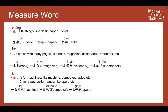Then let's see the second special measure word: 本。 本 is used for books with many pages, like books, magazines, dictionaries, notebooks, and so on. Let's see the examples. 一本书 — a book. 一本杂志 — a magazine. 一本词典 — a dictionary. 一本笔记本 — a notebook.